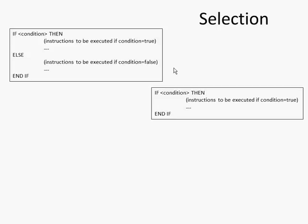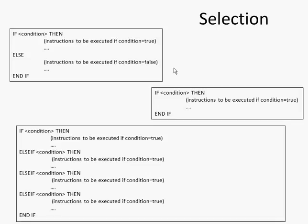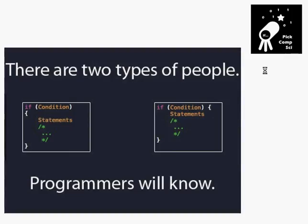We can ramp up the complexity of an if statement by introducing else ifs, where we can have more than two possible paths through our code. Hope you enjoyed if statements as part of selection. In the next video, we'll look at case statements as part of selection.